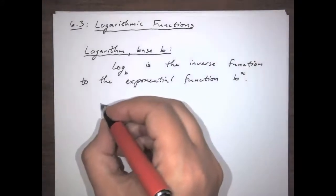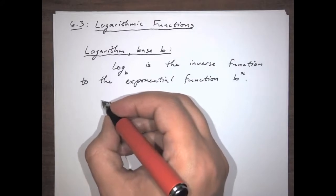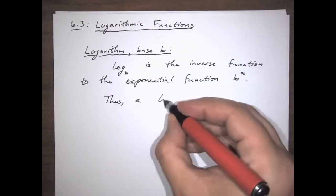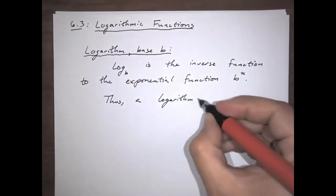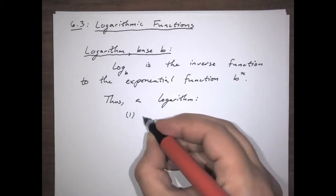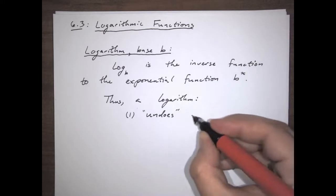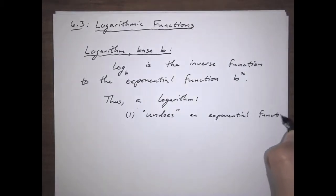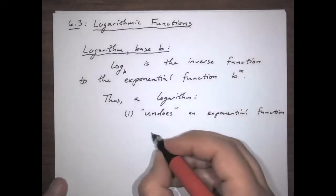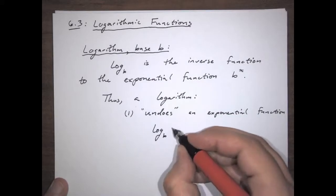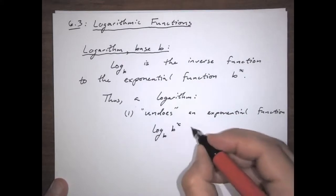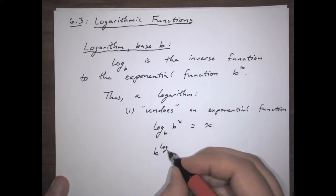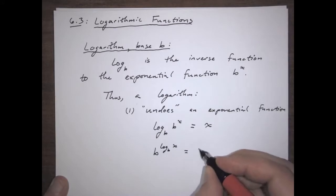So in other words, let's think about what this means. A logarithm, on the one hand, undoes an exponential. One way of thinking about it is that a logarithm undoes an exponential function. So what that means is, if I did the log base b of b to the x, they would cancel each other out and just leave me with an x. And then, conversely, if I had b to the power of the log base b of x, those would cancel out and also leave me with an x.